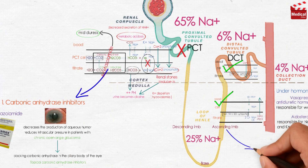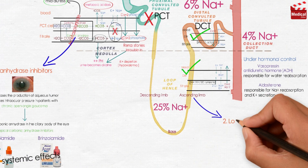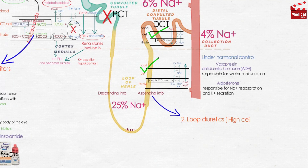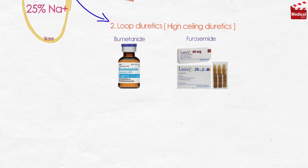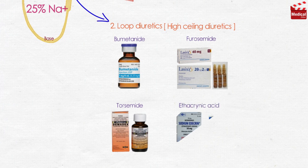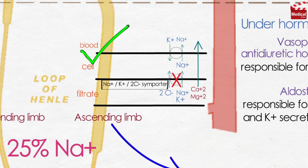The second category is loop diuretics, also known as high-ceiling diuretics, such as bumetanide, furosemide, torsemide, and ethacrynic acid. Loop diuretics inhibit the co-transport of sodium, potassium, and 2-chloride in the luminal membrane in the ascending limb of the loop of Henle. Therefore, reabsorption of these ions is decreased.